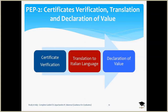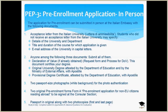Verification means they will actually call the universities where you studied and confirm that you are a genuine student and that your educational documents are correct. Once that is done, they will translate those documents into Italian, and after that you can apply for the Declaration of Value, which you will receive from the application center. Once you have the certificate verification, translation, and Declaration of Value, you can apply for pre-enrollment in person at the Italian Embassy. Note that the application can be submitted with or without an acceptance letter from the university.